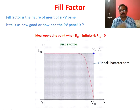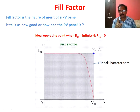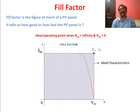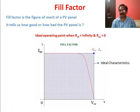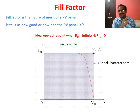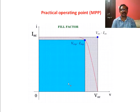If RSH is infinity and RSE is zero, we get the ideal characteristics — you can see the gray color box, which is a square or rectangle. That square represents the ideal characteristics of a solar cell. But practically, RSH is not infinity and RSE is not zero, and thereby we get a red color curve, which is the IV characteristics of a practical PV cell.